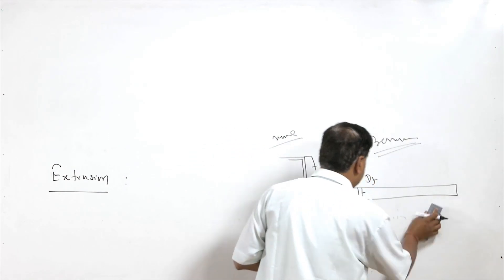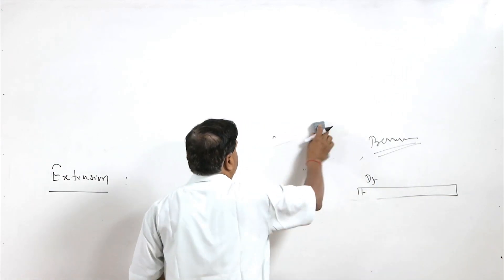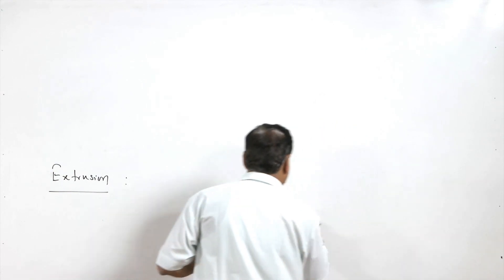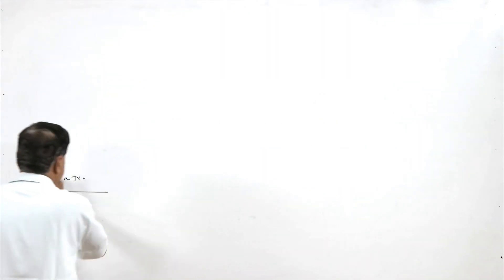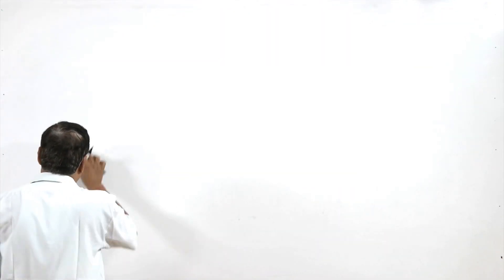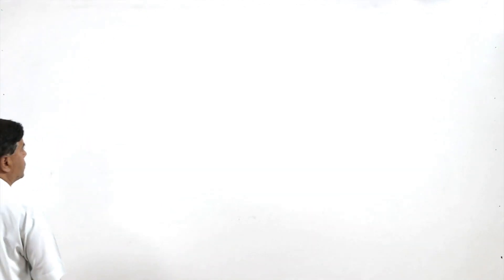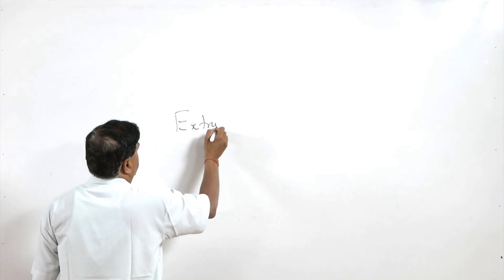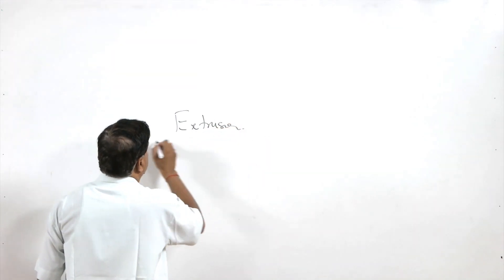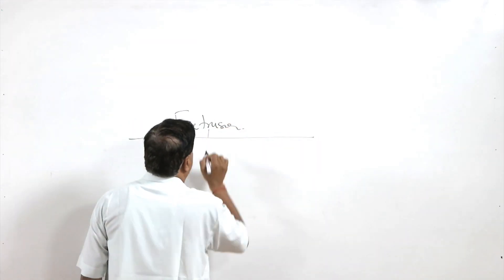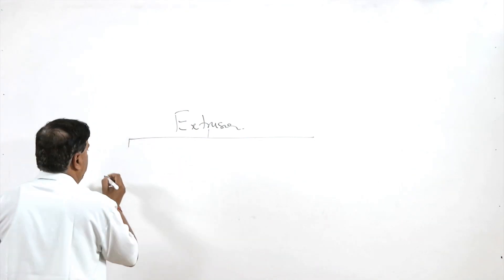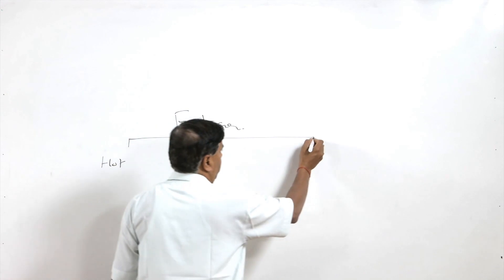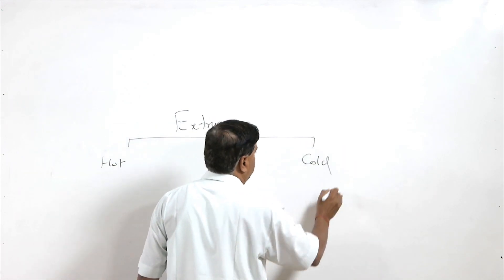Now I will classify the extrusion process based on how extrusion is carried out or the temperature conditions. If we plot the tree for the extrusion process, there are two broad categories: hot extrusion and cold extrusion.